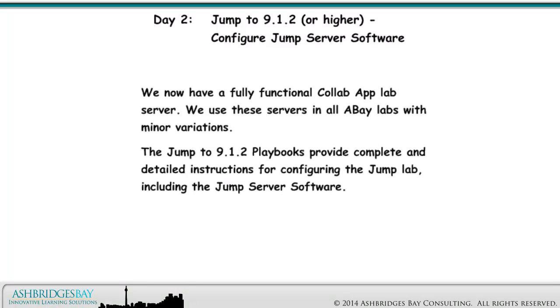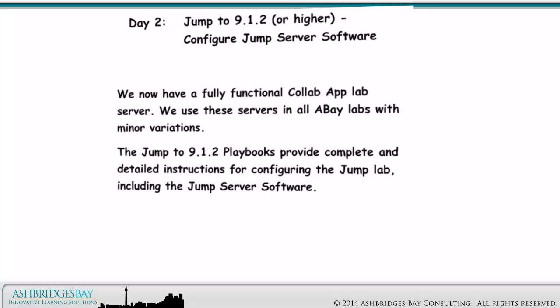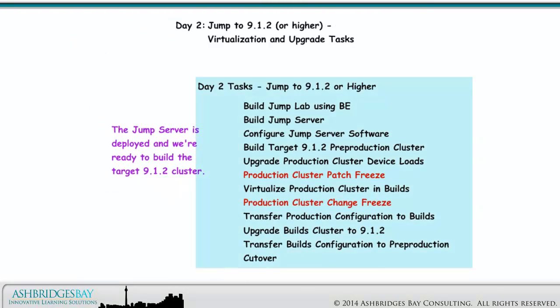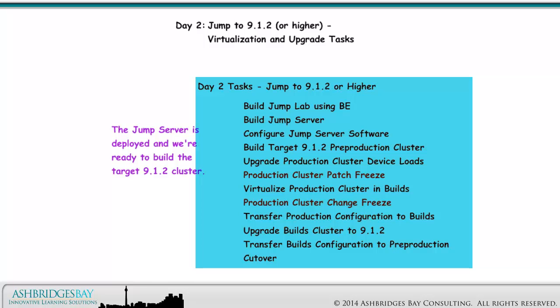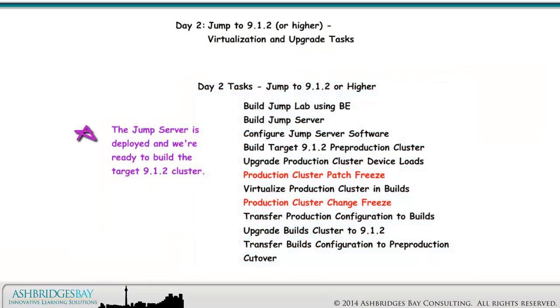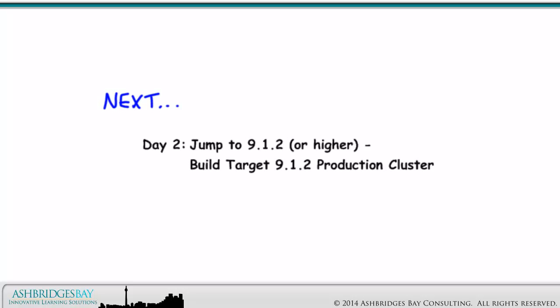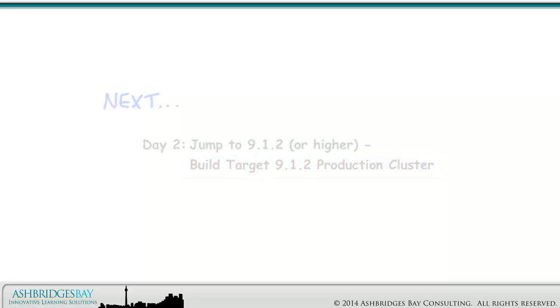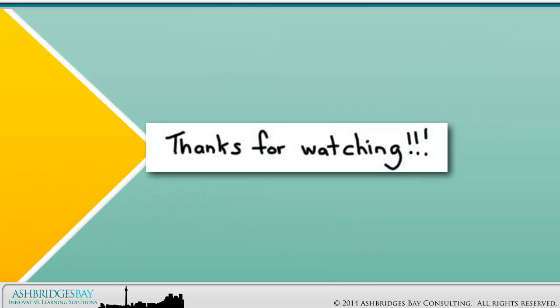We now have a fully functional CollabAppLab server. We use these servers in all AbayLabs, with minor variations. The Jump to 9.1.2 playbooks provide complete and detailed instructions for configuring the Jump lab, including the Jump server software. The Jump server is deployed and we're ready to build the Target 9.1.2 cluster. Coming up next: Day 2, Jump to 9.1.2 or higher — Build Target 9.1.2 production cluster. Thanks for watching!